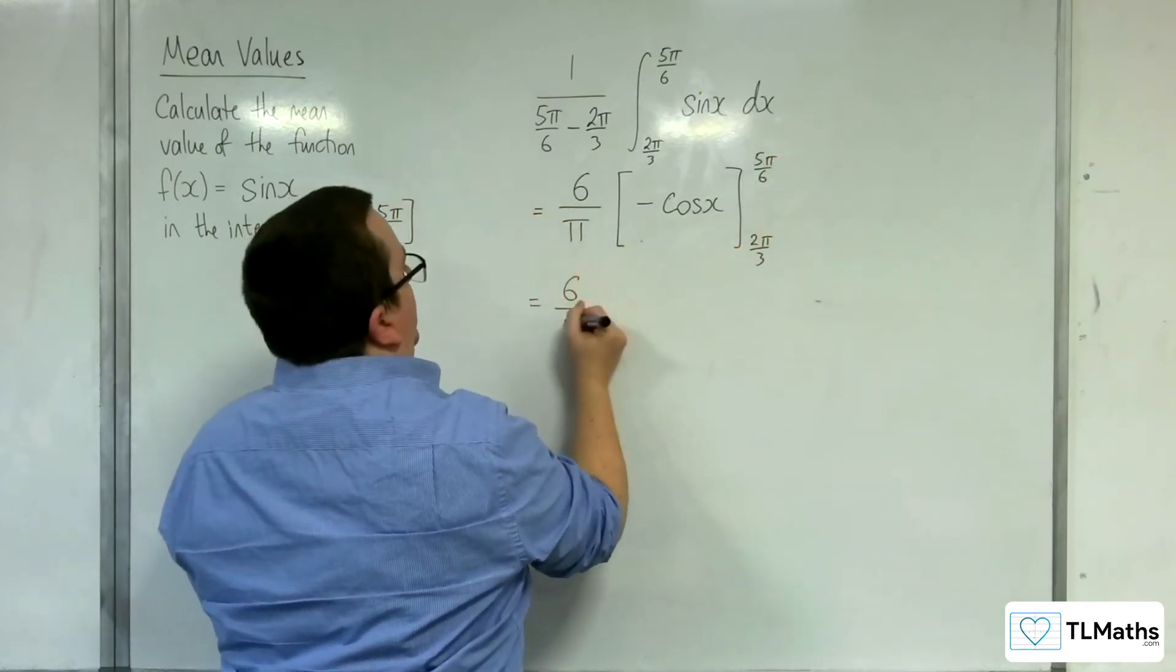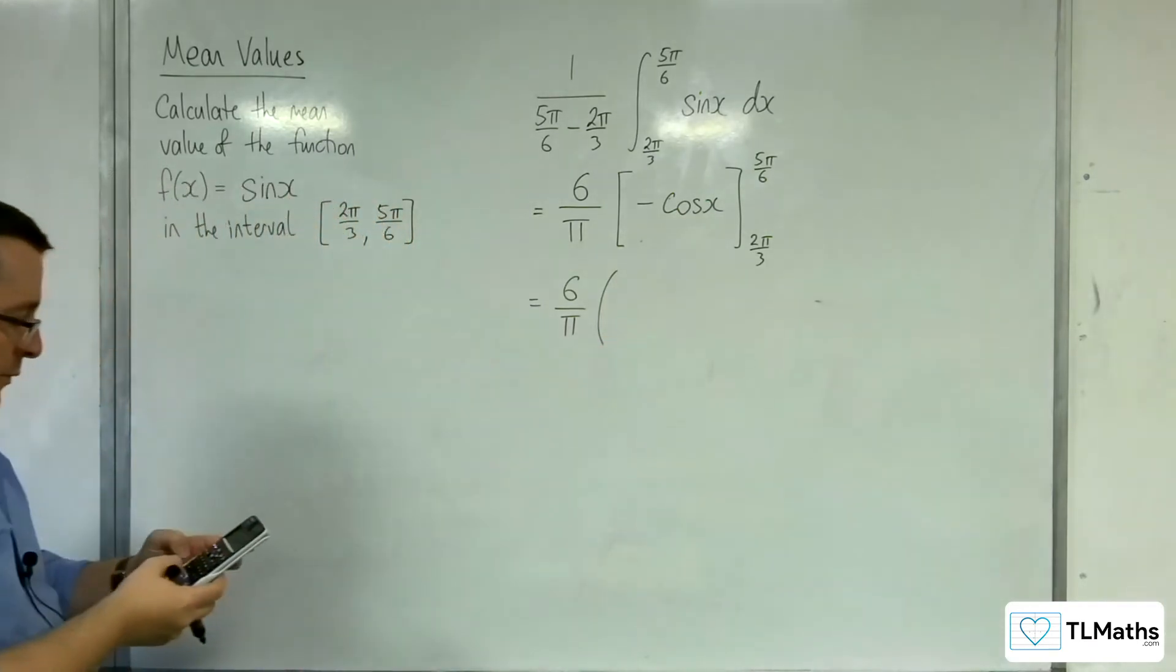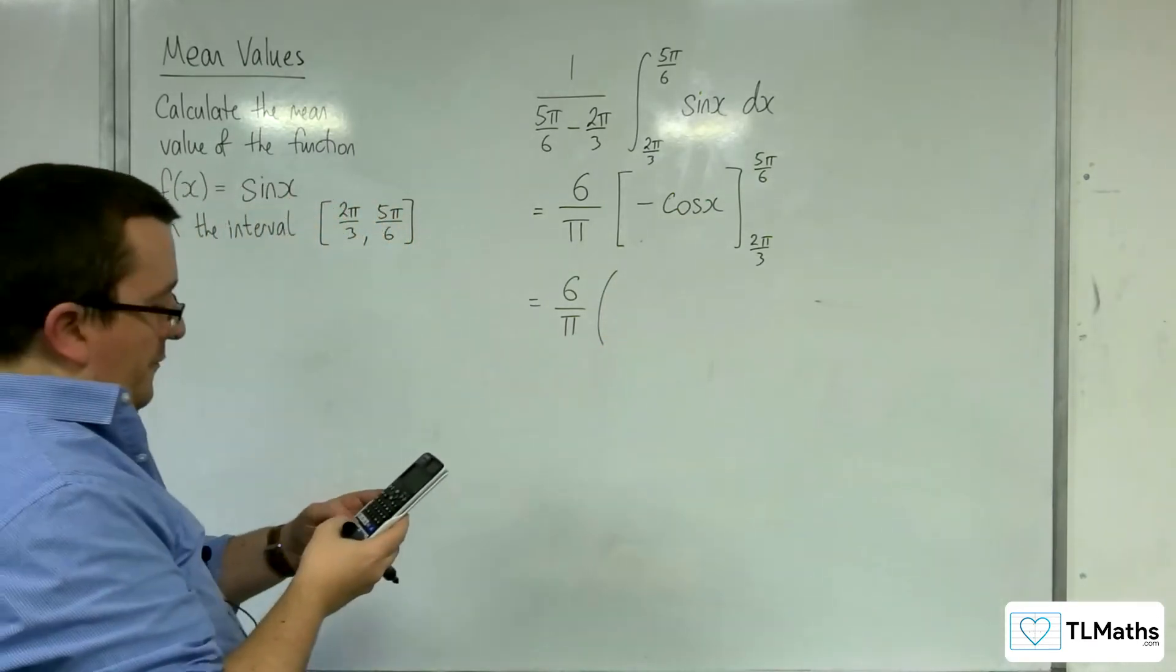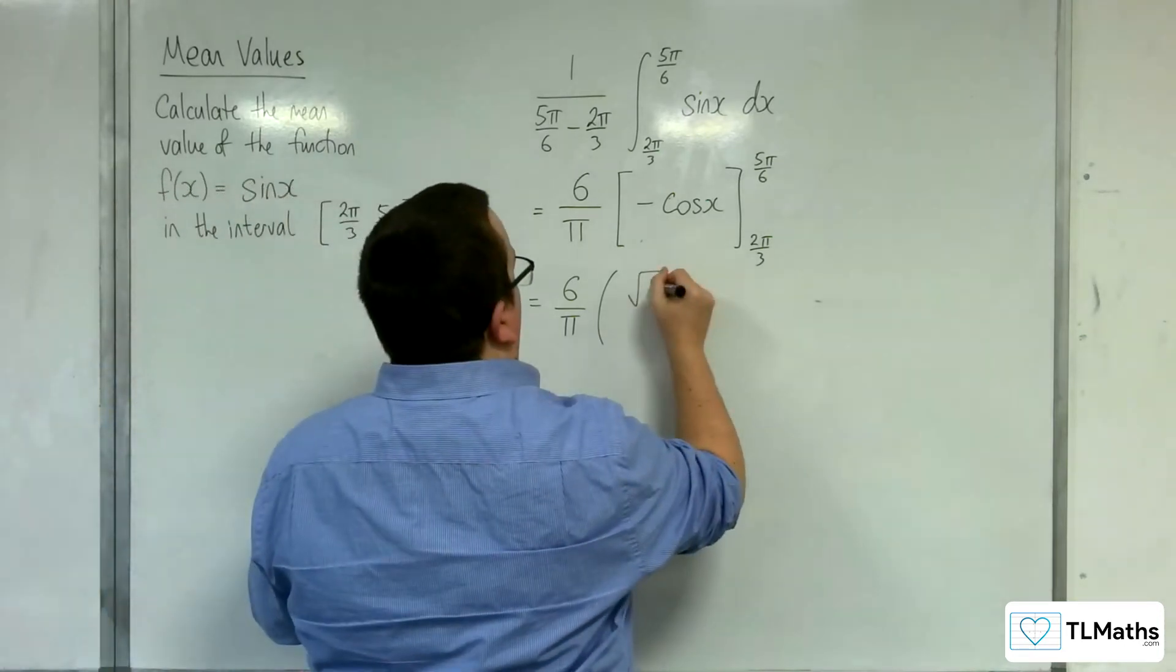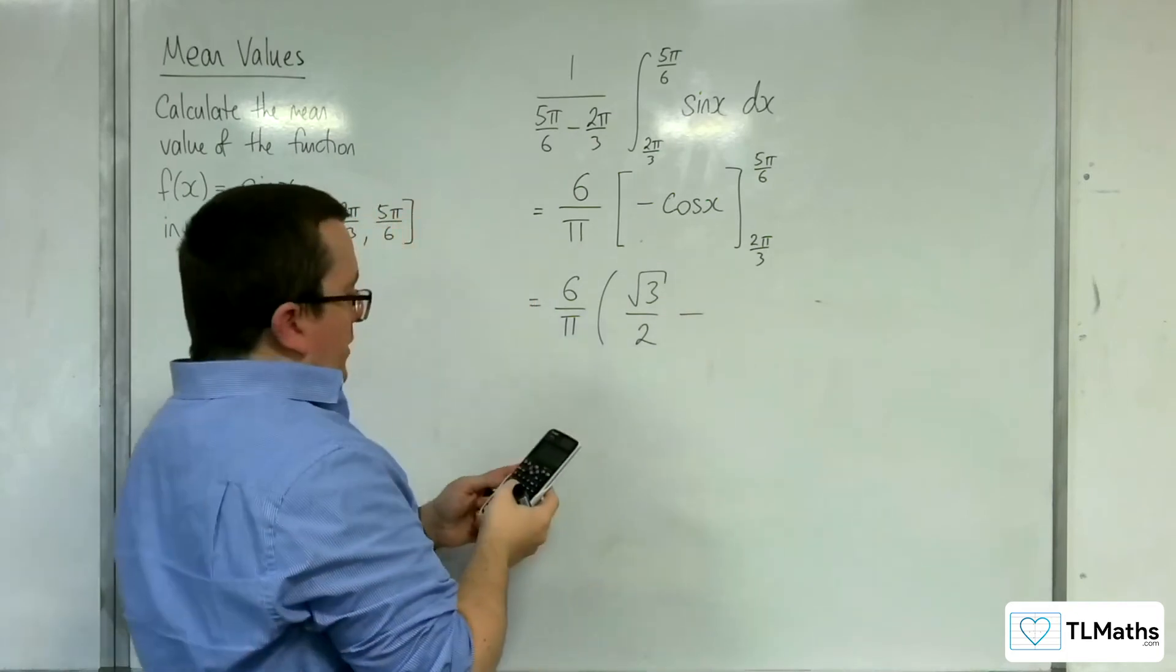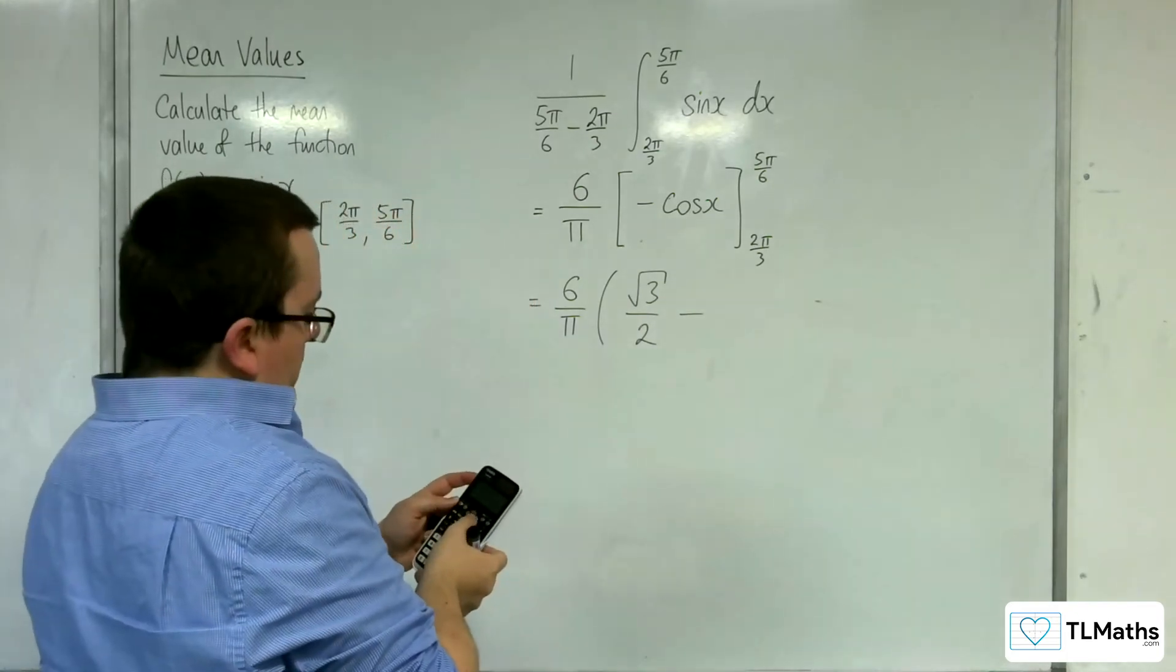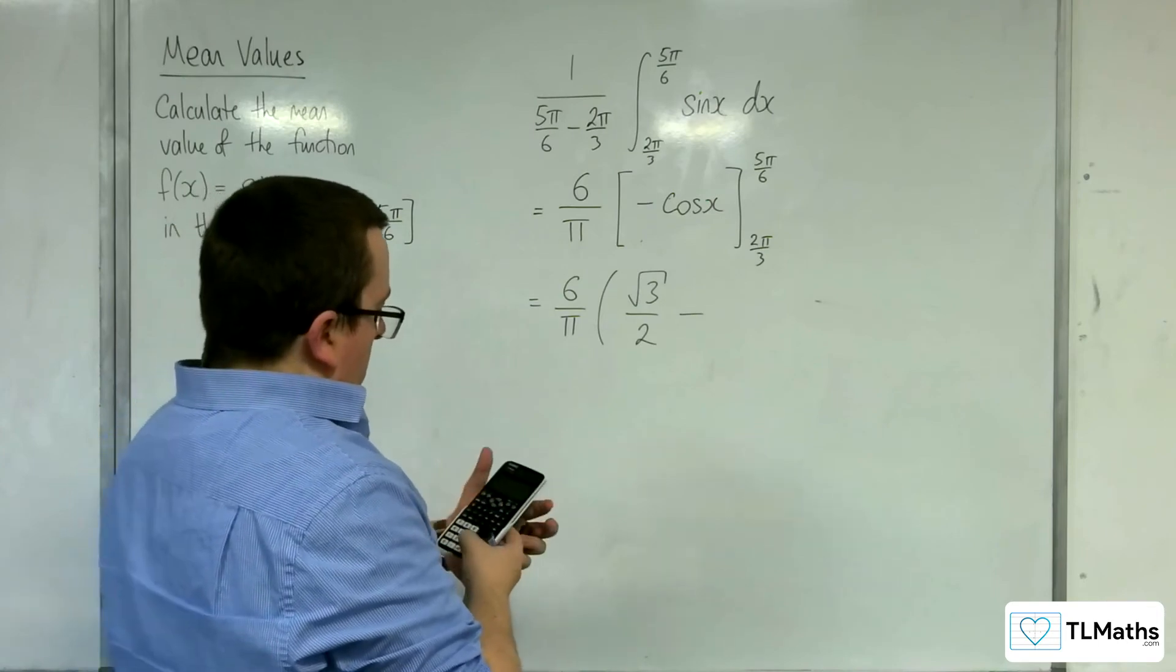So we've got 6 over pi times. So minus cosine of 5 pi over 6 is root 3 over 2. Then take away, substituting in the 2 pi over 3, is 1 half.